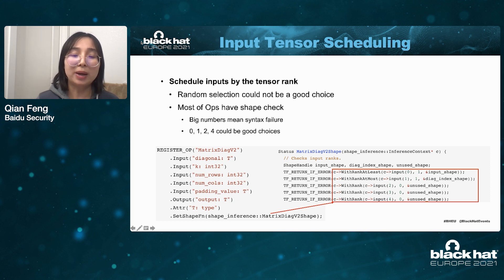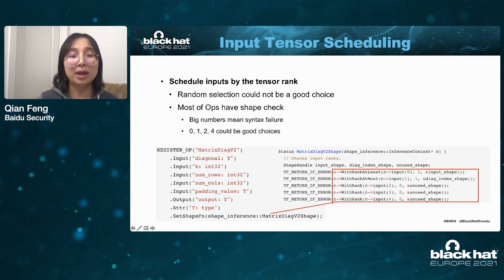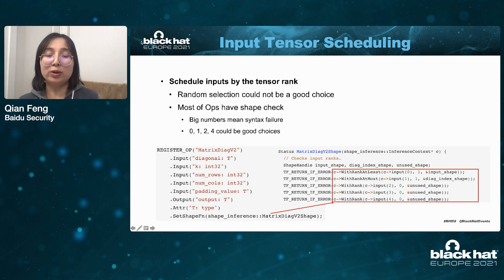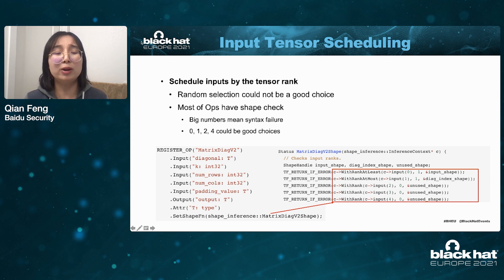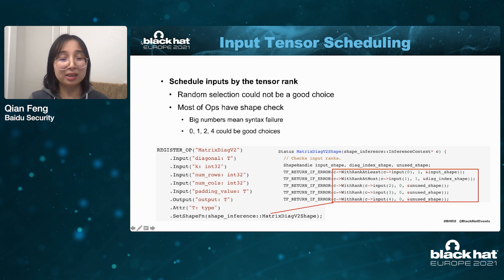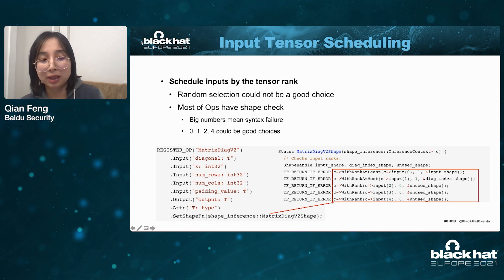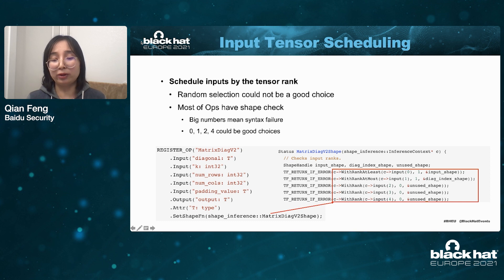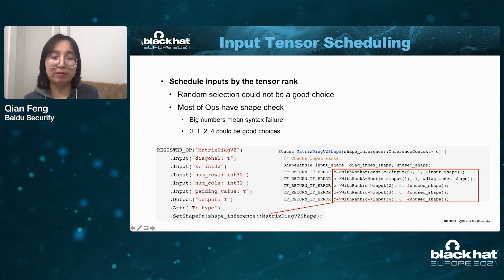We can also schedule inputs by tensor rank. Again, random selection is not a good choice — there are so many checks on the operators, and most operators have shape inference checks at the graph generation stage. So if we randomly generate tensors with different ranks it will fail all the time. For example, the MatMulDelV2 operator checks each of its arguments for a specific rank value — it checks that the last two arguments are rank zero, and if not it fails. So feeding this operation with tensors of other rank values will get an error.